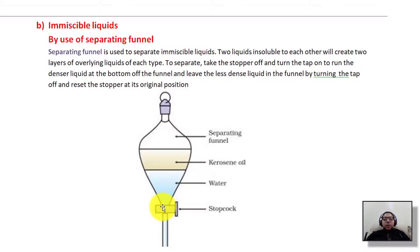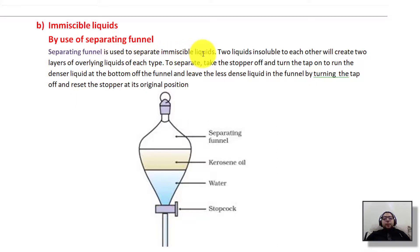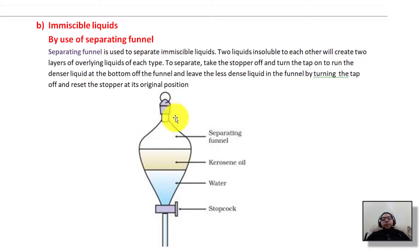We pour the immiscible liquids into the separating funnel. The denser liquid — like water — sinks to the bottom. We open the tap and let the water flow down into a container. When the water reaches the tap, we stop the flow, remove that container, and place another for the kerosene. We open the tap again and kerosene flows down. The denser liquid is at the bottom and the less dense liquid remains on top; we turn the tap off to keep the less dense liquid in the funnel.